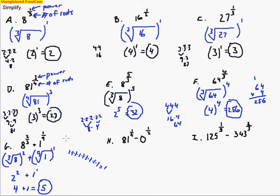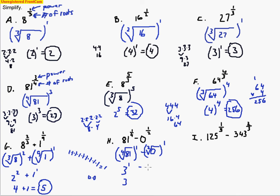Same sort of thing on this next one. Four numbers that multiply to make 81, raised to the first power — we did that already: four numbers making 81 gives 3, and 3 to the first power is 3. Minus: two numbers that multiply to make 0 and they have to be the same — that's just 0 times 0, which is 0. So 3 minus 0 gives an answer of 3.